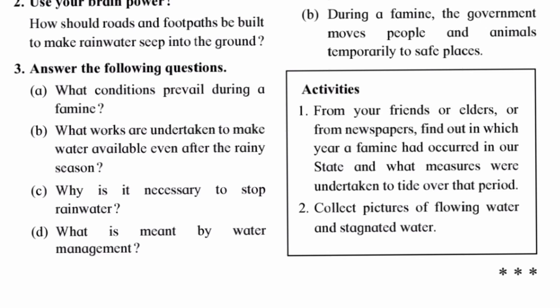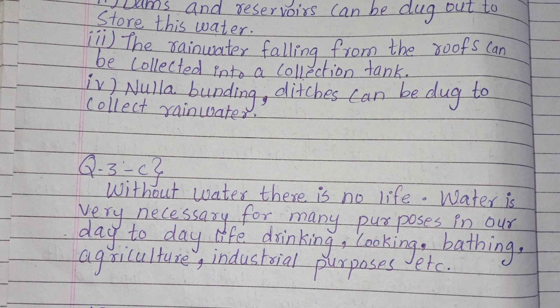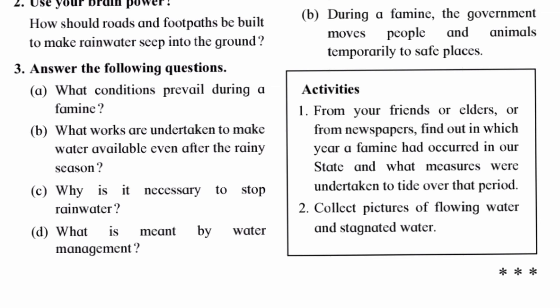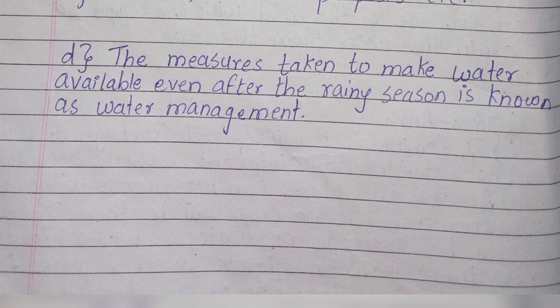Question three (c): Why is it necessary to stop rainwater? Answer: Without water there is no life. Water is very necessary for many purposes in our day-to-day life — drinking, cooking, bathing, agriculture, industrial purposes, etc. Question three (d): What is meant by water management? Answer: The measures taken to make water available even after the rainy season is known as water management.